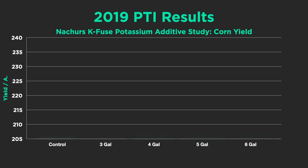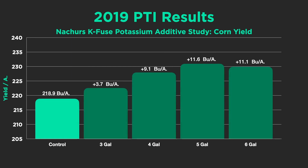Here are results from 2019 at the PTI farm using K-Fuse on corn. We applied it at three, four, five, and six gallons per acre. Three gallons probably wasn't enough, but once we ramped up to four, five, and six gallons, we're seeing nine to eleven bushel responses. So we are seeing real benefit from having potassium applied in a high concentrated band on the planter.